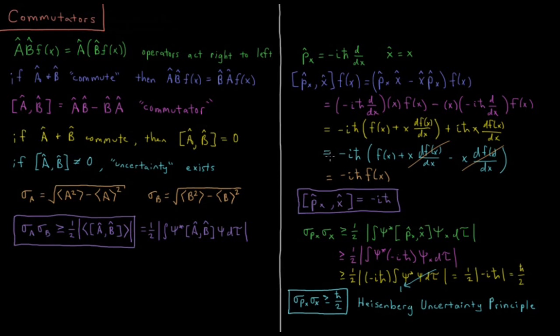All right, we'll factor out a minus i h bar from everything. So we have an f of x here from one of our situations, and we have a plus x df of x dx, and since we're factoring out a minus i h bar, this plus i h bar is going to go to a minus, so we'll get a minus x df of x dx. So these two terms in the middle here have canceled each other. They're equal and opposite. So what's left over at the end is minus i h bar f of x.